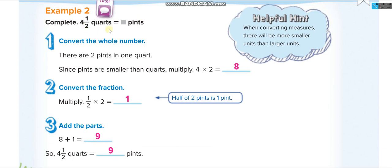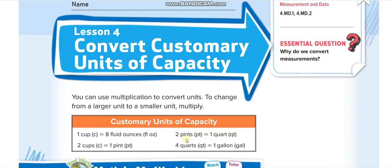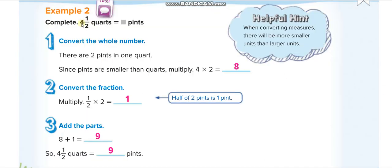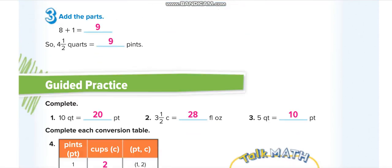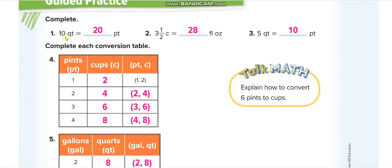Four and a half quarts: one quart is equal to two pints, so half a quart is one pint. Four quarts times two is eight pints, and half a quart is one pint, so eight plus one is nine pints. Moving down: ten quarts times two is twenty pints. Next: three and a half cups — how many fluid ounces?